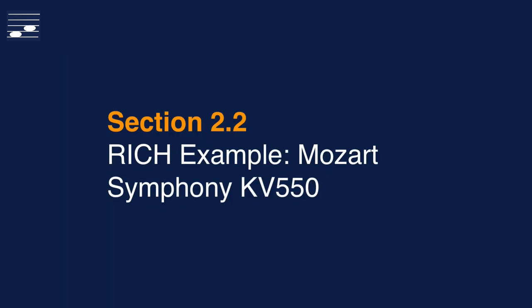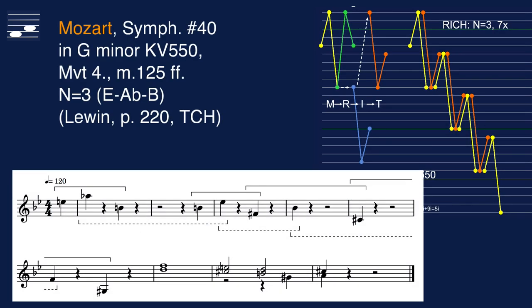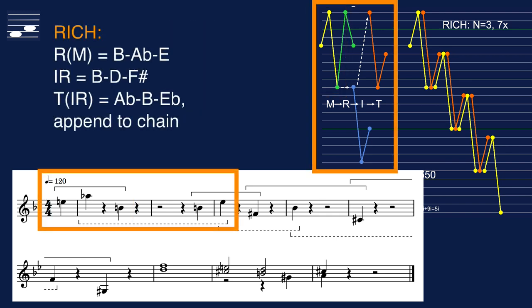In the Lewin book there is another fascinating example from a late Mozart symphony. In the closing movement of symphony number 40 in G minor there is this transition, based on a three-note motif, E, A-flat B, that contains a seven-statement chain by repeated use of the RICH procedure, with an overall two-octave compass. Here we see the retrograde B, A-flat E, the inversion around pitch B.